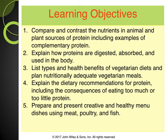Some learning objectives: Compare and contrast the nutrients in animal and plant sources of protein, including examples of complementary protein. Explain how proteins are digested, absorbed, and used in the body. List types and health benefits of vegetarian diets and plan nutritionally adequate vegetarian meals. Explain the dietary recommendations for protein, including the consequences of eating too much or too little protein. And prepare and present creative and healthy menu dishes using meat and poultry.